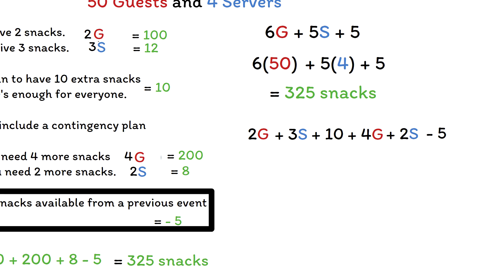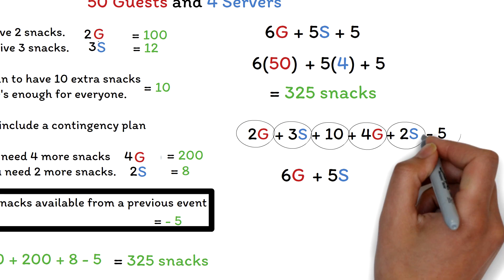Now you have this expression. In algebra, you can add or subtract like terms — like terms have the exact same variables raised to the exact same powers. For this expression, we can add the g terms: 2g plus 4g. We add the numbers and bring the common letter after it — 2 plus 4 is 6, so we have 6g. We do the same for the s terms: 3s plus 2s gives 5s. We can also add the constant terms: 10 minus 5 gives 5.